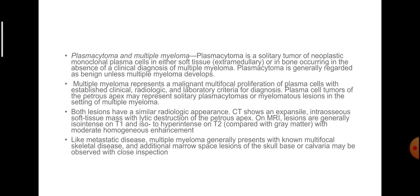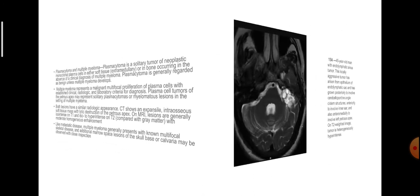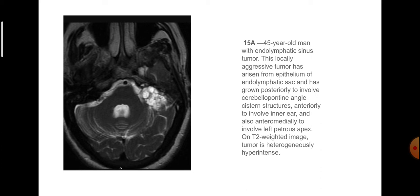Additional marrow space lesions of the skull base or calvaria may be observed on close inspection. This is a 45-year-old man with endolymphatic sac tumor — a locally aggressive tumor arising from the epithelium of the endolymphatic sac — which has grown posteriorly to involve the cerebellopontine angle structures, anteriorly to involve the inner ear, and anteromedially to involve the left petrous apex. On T2-weighted image, the tumor is heterogeneously hyperintense.